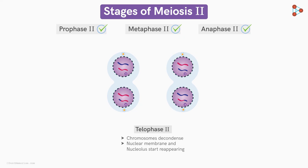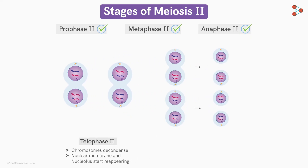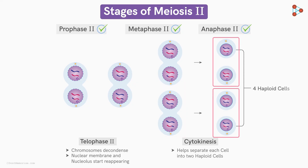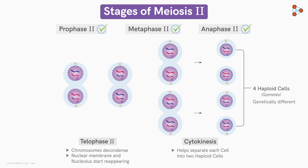The nuclear membrane envelopes the chromosomes and the nucleolus begins to reappear. The chromatids form the daughter chromosomes at both poles. Cytokinesis then divides the cell into two. Since two cells have simultaneously undergone meiosis II, we get four haploid cells at the end. These haploid cells are also called gametes and are genetically different from each other.